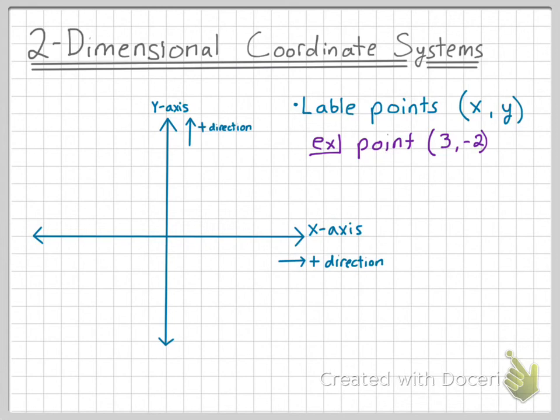So for the point (3, -2), we start at the origin and travel in the positive x direction three spaces, and then down in the negative y direction two spaces, which lands us at the point (3, -2).